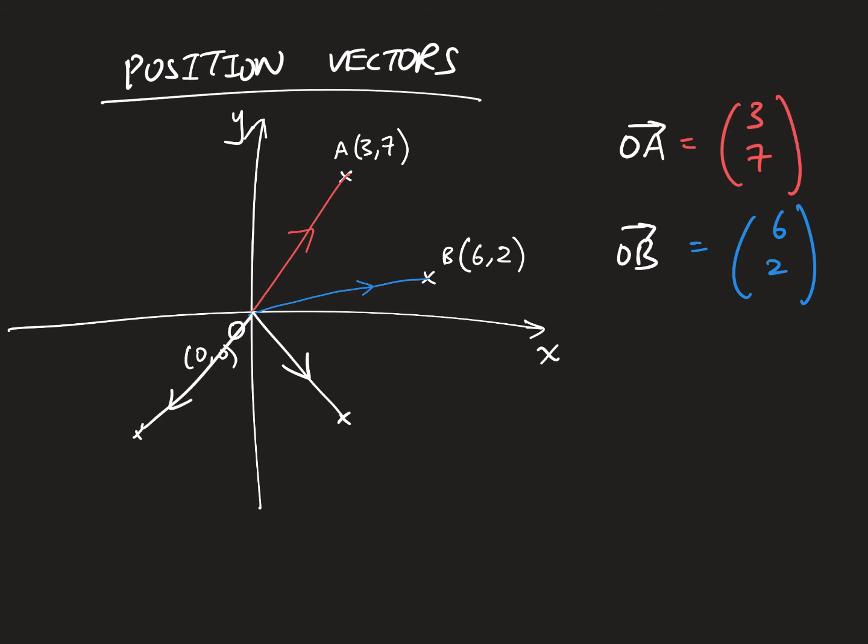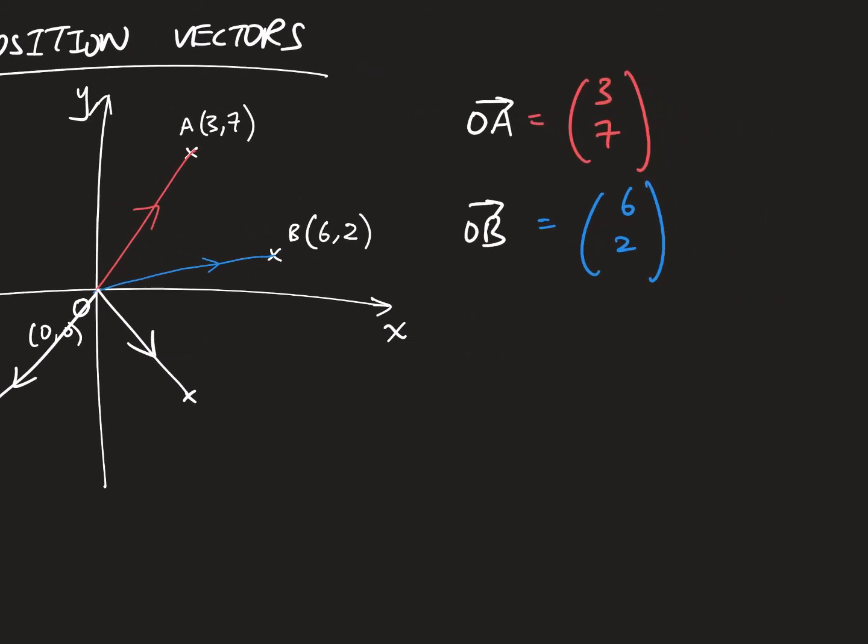And then the next thing is, what if I can tell all these points from the origin? You may think, it's just the same number, how useful is it? But the thing is, let's say I have many, many points, and now I ask you, what is AB?